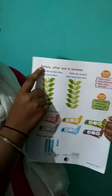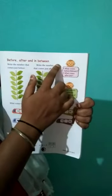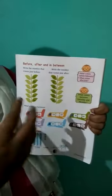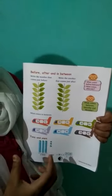Before means jo pehle aata hai. After means jo baad me aata hai. Or between means jo do number ke beech me aata hai. The number comes between the two numbers.